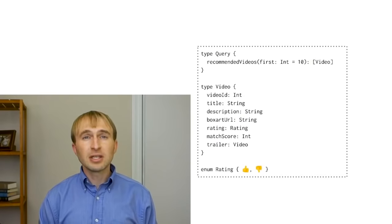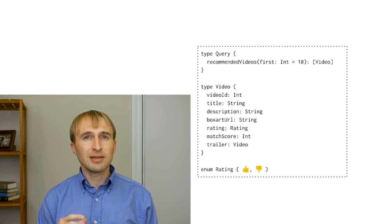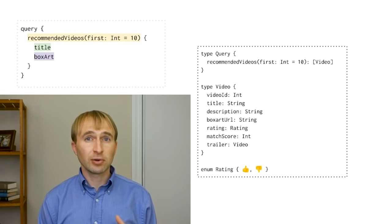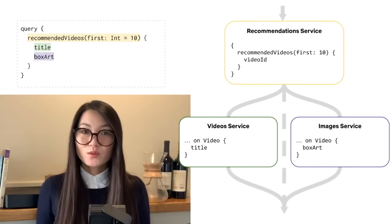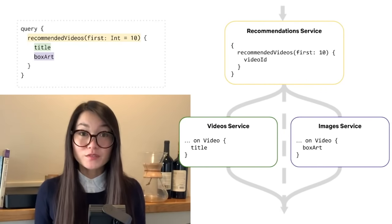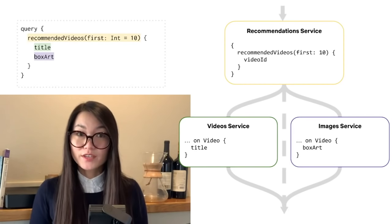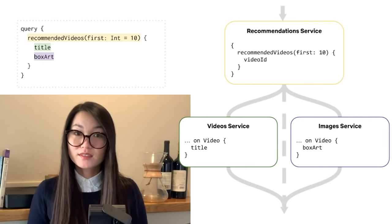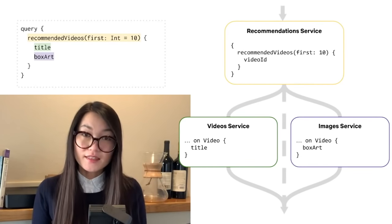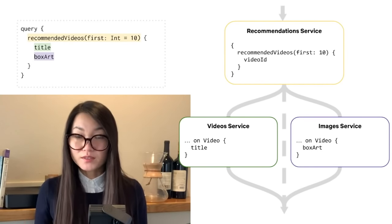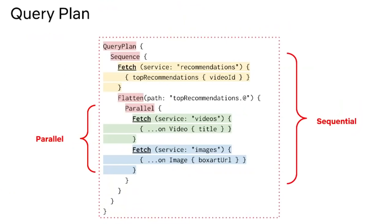The gateway processes a request in two stages: query planning and query execution. The query planner traverses a client's entire request and recursively collects the fields that belong to each service. It identifies the ones that can be fetched in parallel and the ones that have to be retrieved sequentially. Given our initial schema, if we wanted to take the top 10 videos for a given user and for each one fetch the title from the video service and the box art images from the images service, the query plan would look something like this. We know we have to fetch the top recommended videos first because we need those video IDs in order to know which titles and image URLs to fetch.